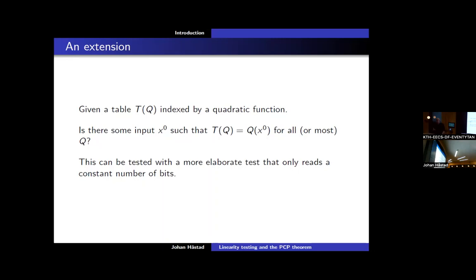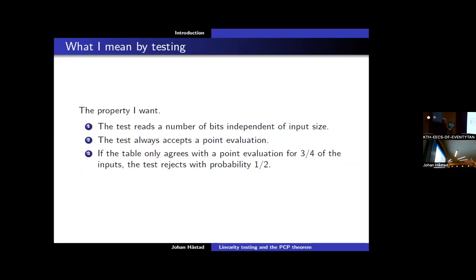You can test this point evaluation property by reading a constant number of bits independent of the number of variables, checking some properties of those bits, and of course you can go to degree three and so forth. What properties do I want? I want the test to read a constant number of bits independent of the input size. If the object has the property, the test should always say so. If it doesn't have the property at all — say it doesn't agree with any point evaluation for more than three-quarters of the bits — the test should reject.